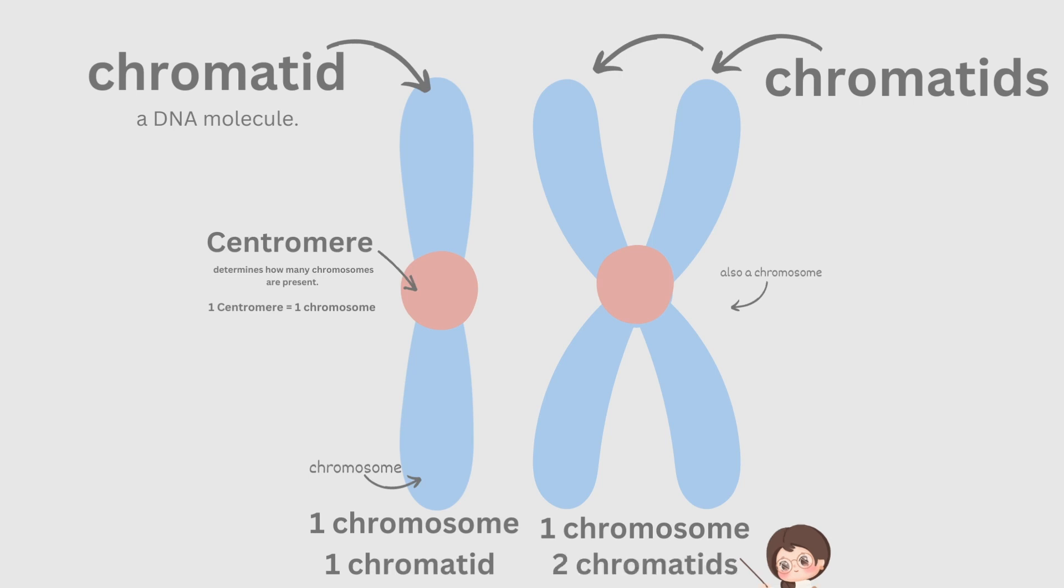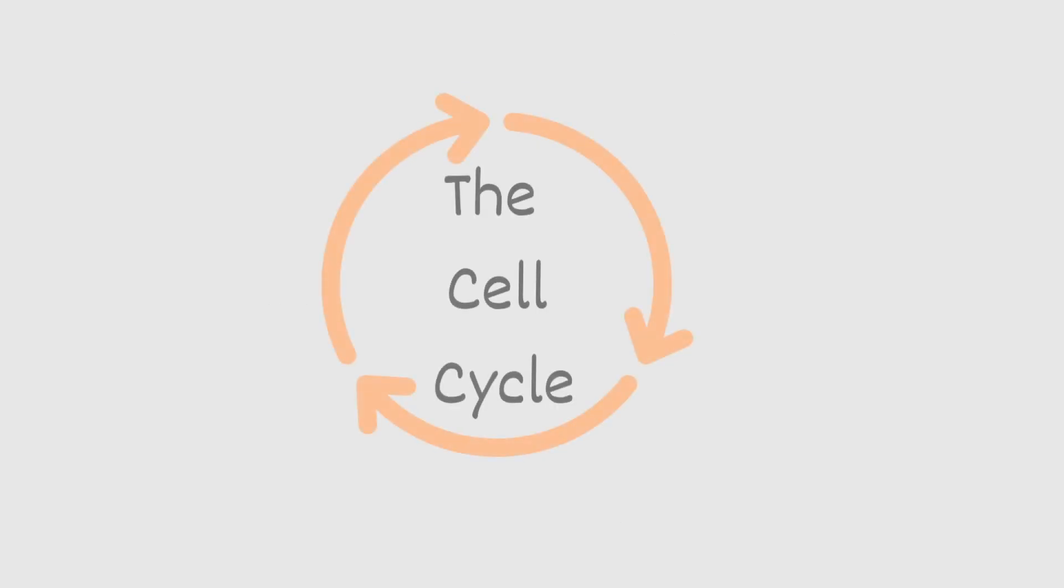Okay, so now that we can visualize the difference between a chromatid and a chromosome, let's move on to the cell cycle. The cell cycle is divided into two major phases, interphase and mitosis.